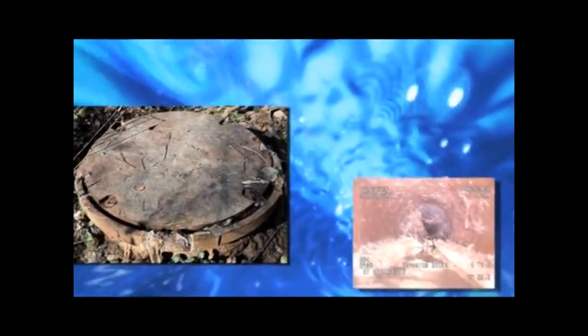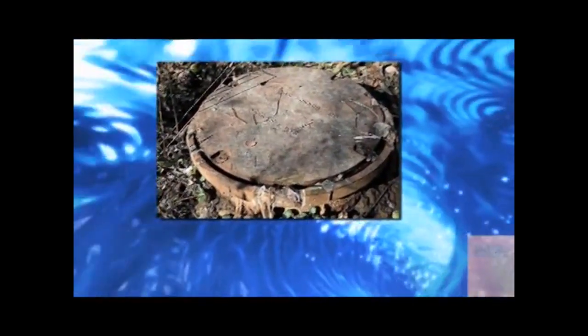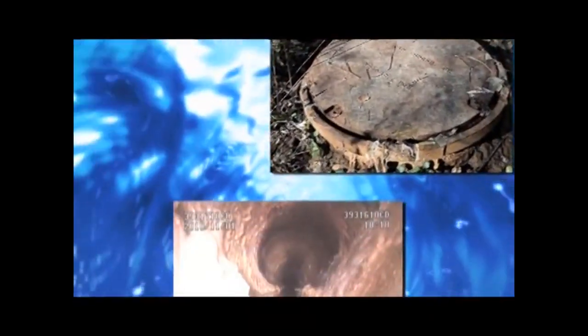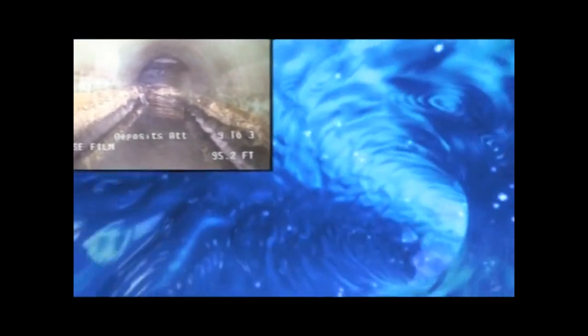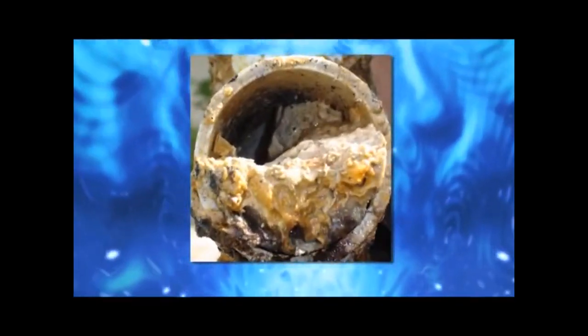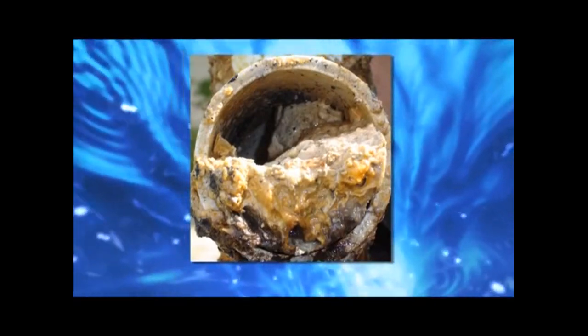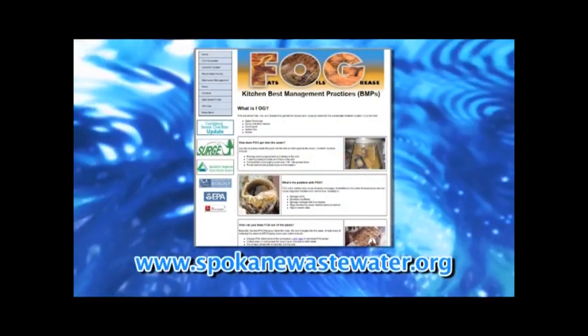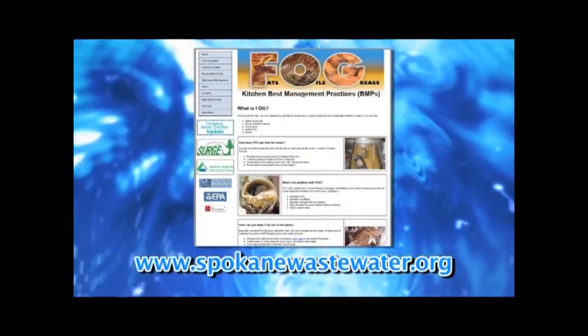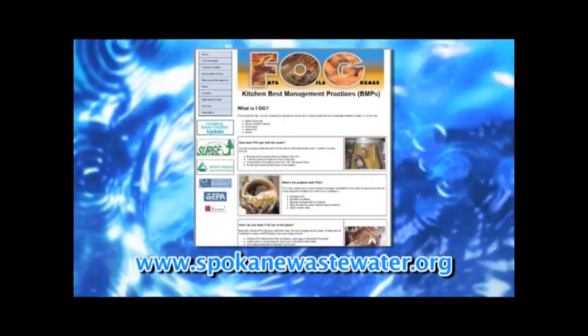FOG is the number one cause of sewer backups nationwide. So when it comes to the pipes under your home, remember the sewer system was designed really only for water and human waste and toilet paper. Anything else can block up the sewer system, can get caught in pumps. For more information about FOG and the Wastewater Management Department, log on to SpokaneWastewater.org.